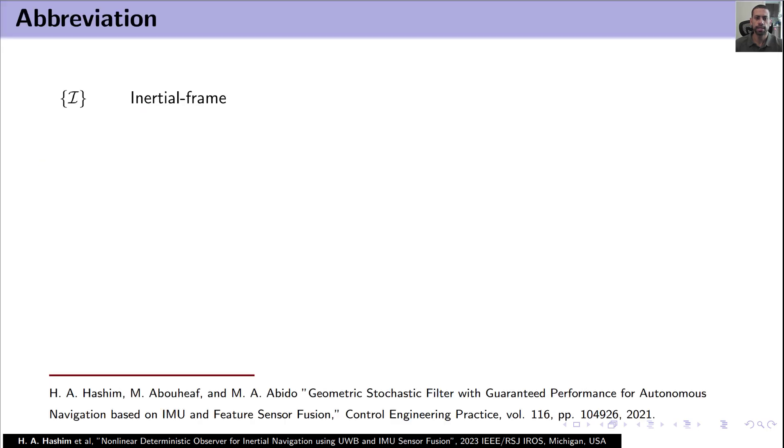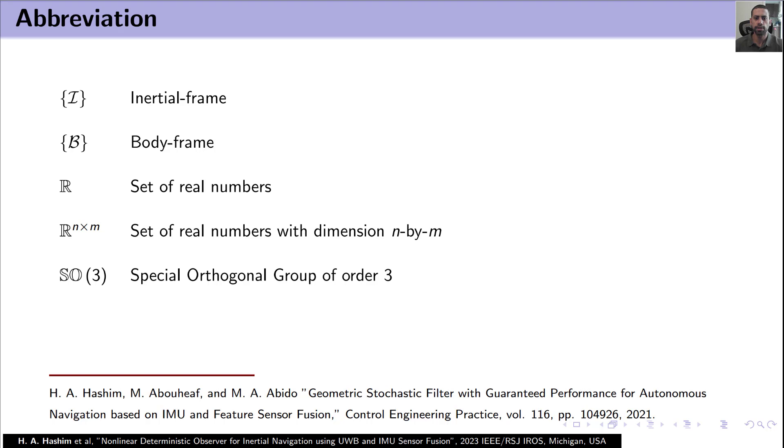In this presentation, I denotes inertial frame, B denotes body frame, R is the set of real numbers, R^(n×m) is the set of real numbers with dimension n by m, SO(3) is the special orthogonal group of order 3, and SE_2(3) is the extended form of the special Euclidean group.